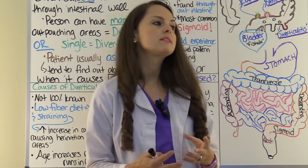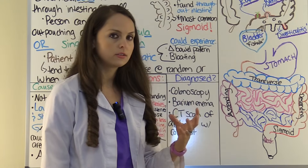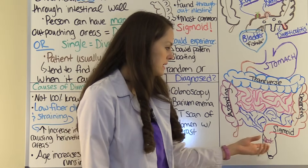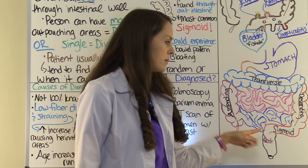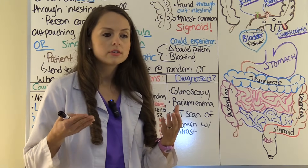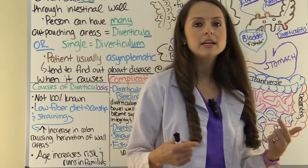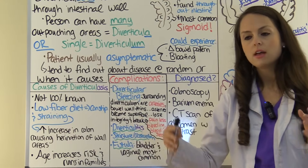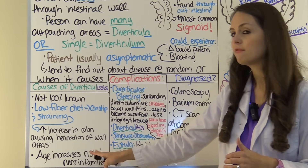Since it tends to occur a lot in the sigmoid colon, if a patient eats a lot of low fiber and has a lot of constipation or straining, all that increased pressure from pushing stool out of the rectum backs up into the sigmoid colon and causes that wall over time to become weak and herniate out. Patients who develop diverticulosis tend to develop this later in life — middle age to older age — and it tends to run in families.